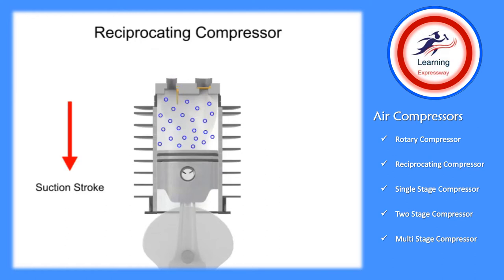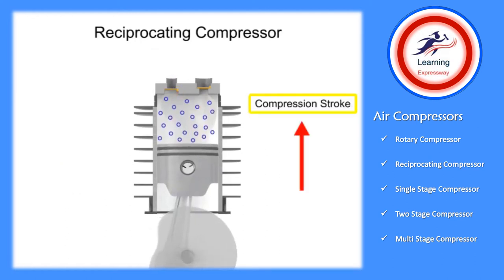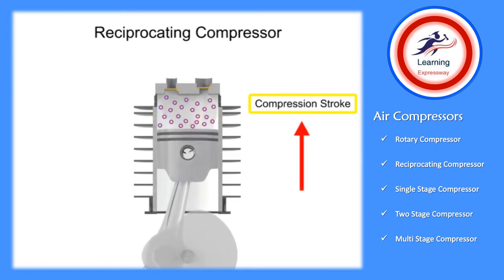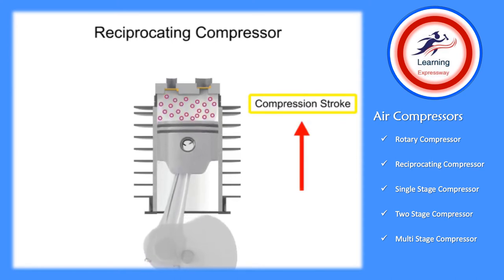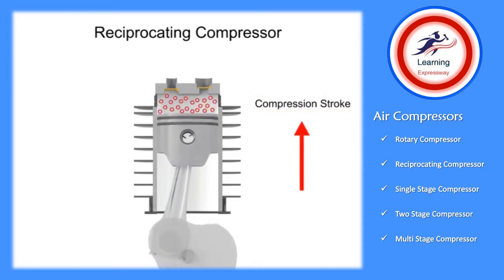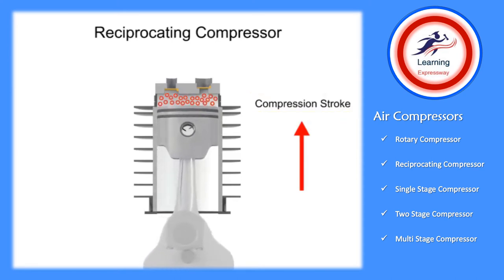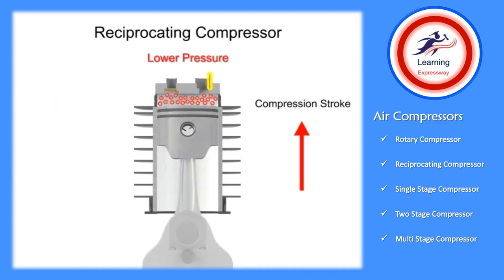As the piston begins its upward compression stroke, the volume within the cylinder decreases. The decrease in volume causes the pressure within the cylinder to increase. The increase in pressure opens the outlet valve and compressed air discharges from the cylinder.